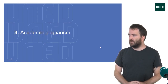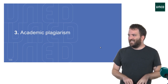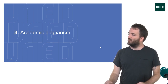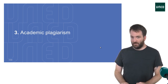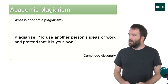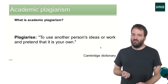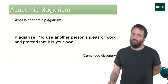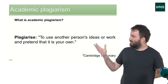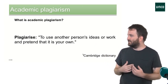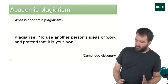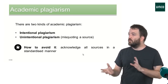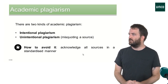In the last part we'll go to academic plagiarism, which is one of the main ethical aspects of academic research. To have a clear definition: plagiarism, taken from Cambridge University, is to use another person's ideas or work and pretend that it is your own. This definition leads us to identify two kinds of academic plagiarism.